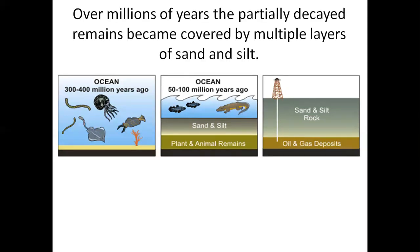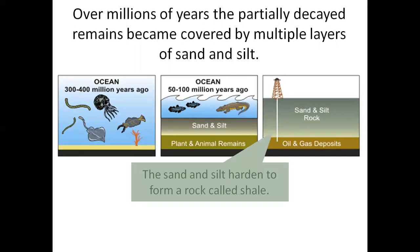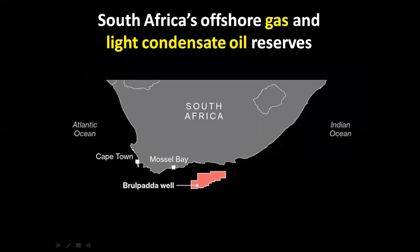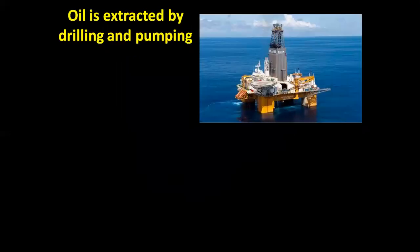Over millions of years, the partially decayed remains became covered by multiple layers of sand and silt. Sand and silt hardened to form a rock called shale. Heat and pressure turn the remains into oil and natural gas. South Africa's offshore gas and light condensate oil reserves are shown, including the Drill Pedo well, a deep offshore well. Oil is extracted by drilling and pumping, both floating offshore and on land.